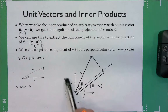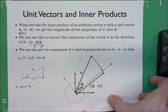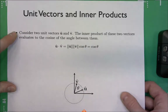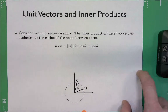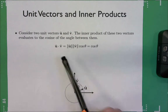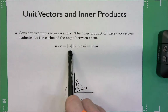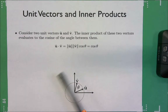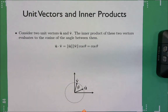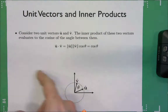In the special case of two unit vectors, taking their dot product gives directly cos(θ), since both lengths are 1. So if I want to retrieve the angle between two unit vectors, I can just take the arc cosine of their dot product and I have the angle.